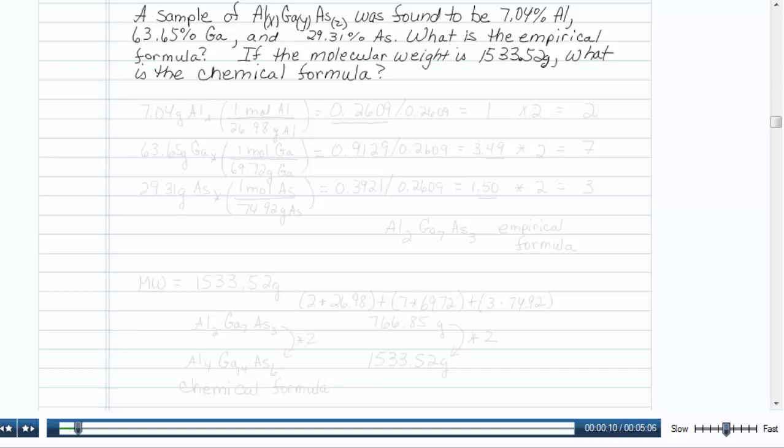A sample of aluminum, gallium, and arsenic, with amounts y, x, and z, was found to be 7.04% aluminum, 63.65% gallium, and 29.31% arsenic. What is the empirical formula?